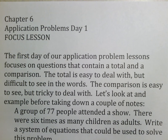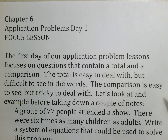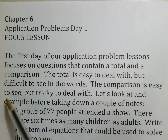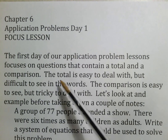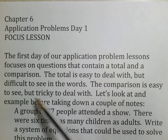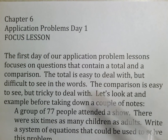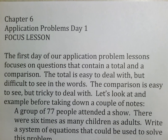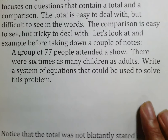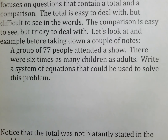The first type covers questions that contain a total and a comparison. The total is easy to deal with but hard to spot in the wording. The comparison is easy to see but tricky to set up. So one is hard to find but easy to write, and the other is easy to find but hard to write. Let's look at an example before taking notes.